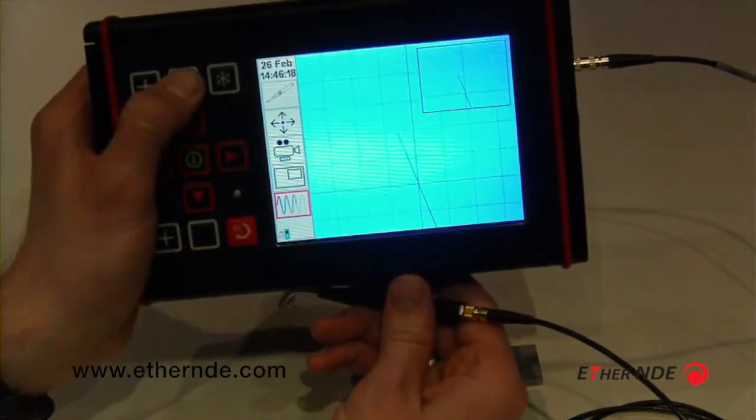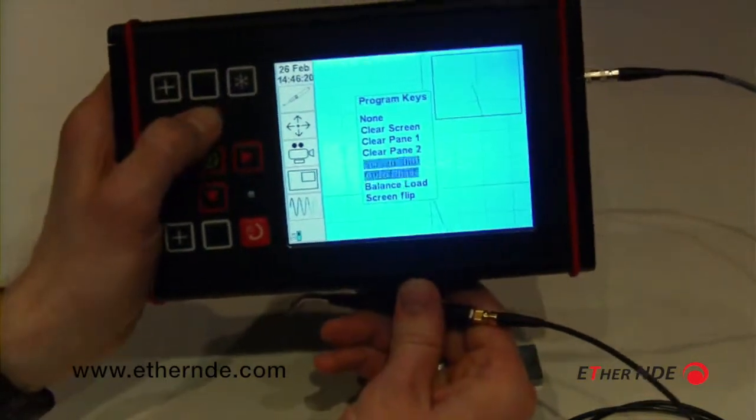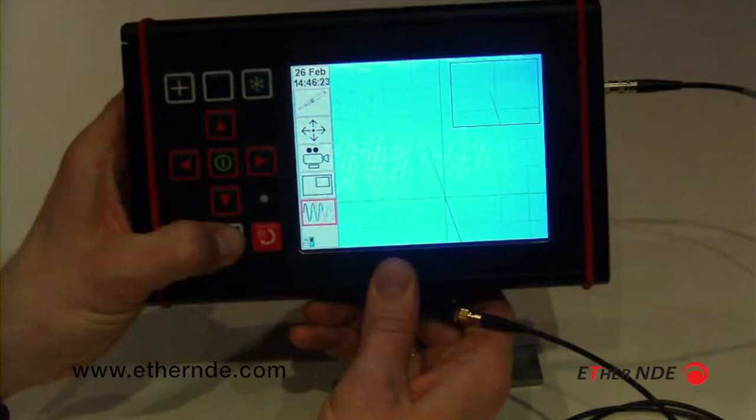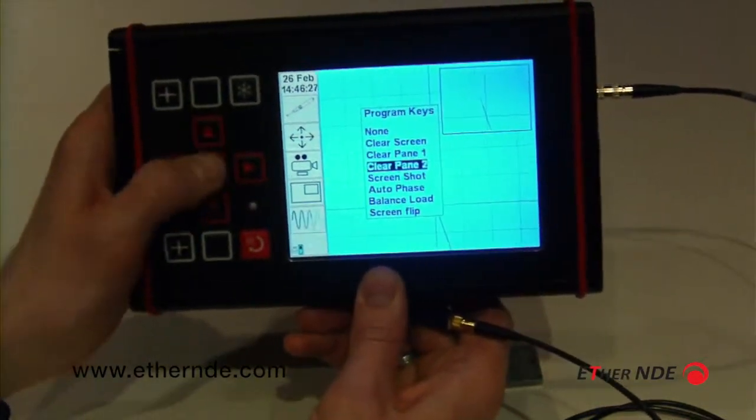In this example, if I hold down the top programmable key, I can set that to clear pane 1. I shall hold down the bottom programmable key, set that to clear pane 2.